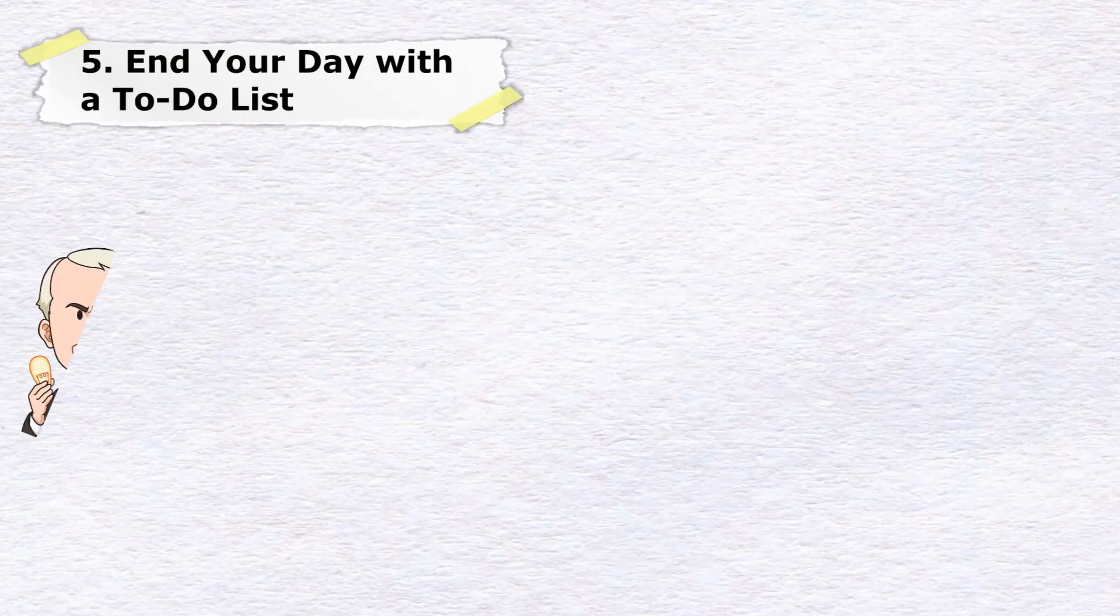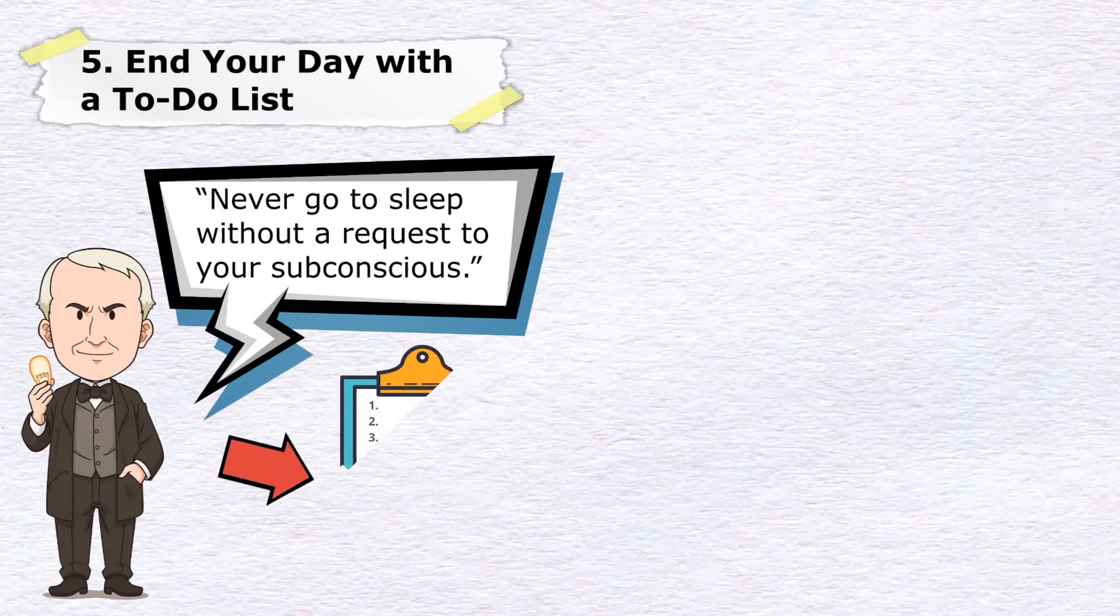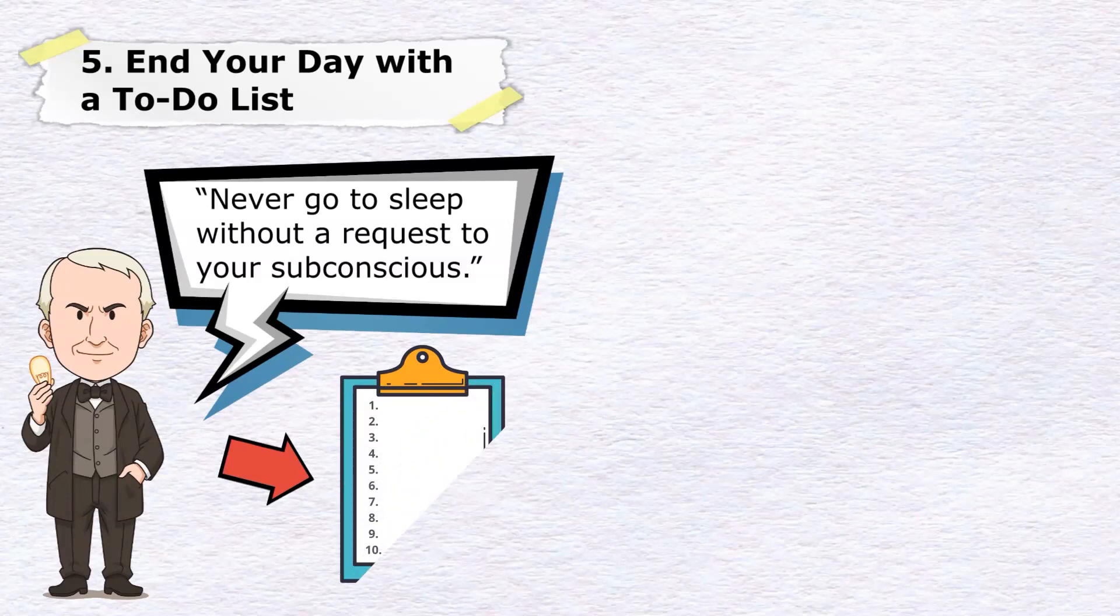Number five: end your day with a to-do list. In the words of Thomas Edison, never go to sleep without a request to your subconscious. And one of the best ways to implement this idea is to write a to-do list at the end of the day. In doing so, you're effectively giving yourself a list of incomplete tasks that, according to Dr. Zeigarnik's research, you're more likely to remember and be motivated to complete.